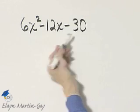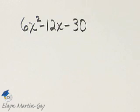I have 6, 12, and 30, or 6, negative 12, and negative 30, but I'm looking for a positive integer here.